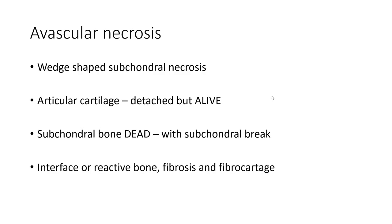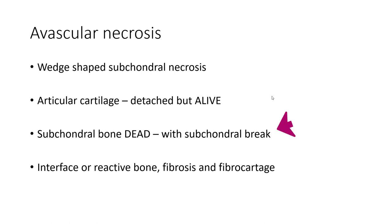The key histologic features for avascular necrosis are: on gross, a wedge-shaped area of subchondral sclerosis that often appears chalky. The articular cartilage is often detached but microscopically alive. The subchondral bone is dead, resulting in a crack between the articular cartilage and the subchondral bone. The interface naturally is alive with fibrosis and fibrocartilage.